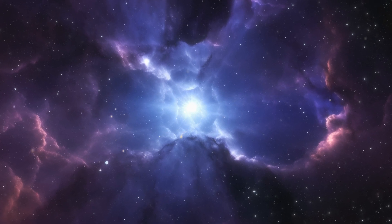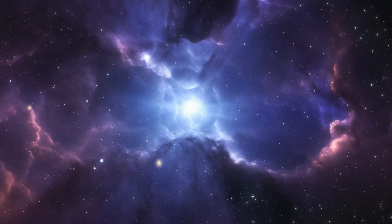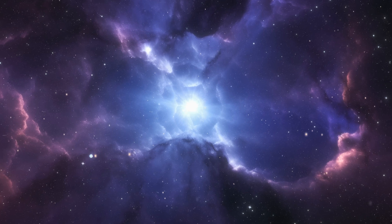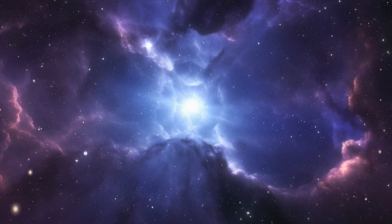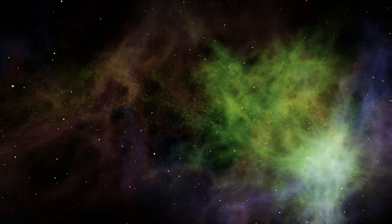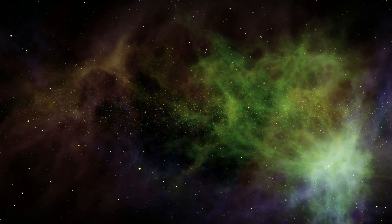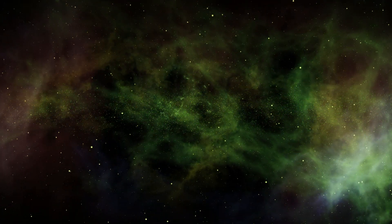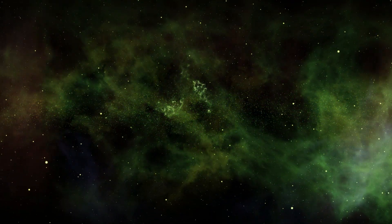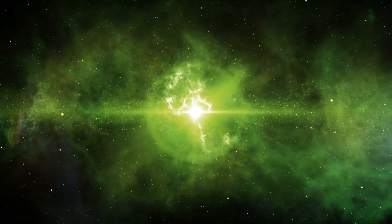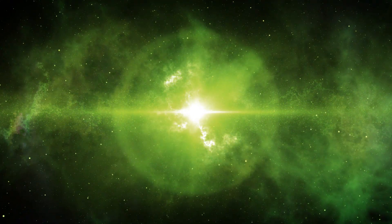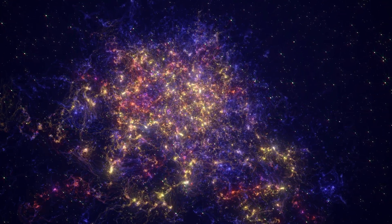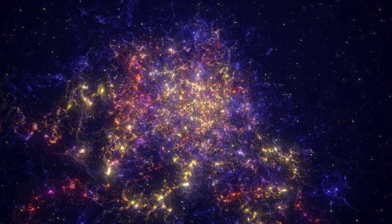Imagine a universe where the expansion we've come to expect suddenly halts. This is the Big Crunch, a cosmic drama where everything we know about space begins to reverse. Picture galaxies, once drifting apart, now pulled back together by an unseen force. Over billions of years, this process accelerates and stars that once shone brightly begin to collide in a cosmic ballet. As this dance continues, galaxies merge in spectacular displays, their light intensifying before disappearing into vast darkness.